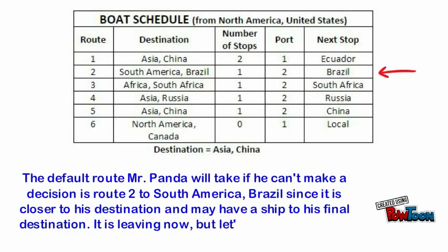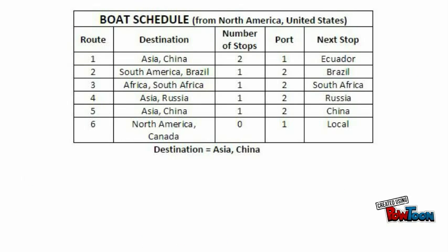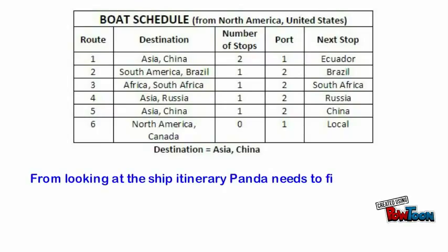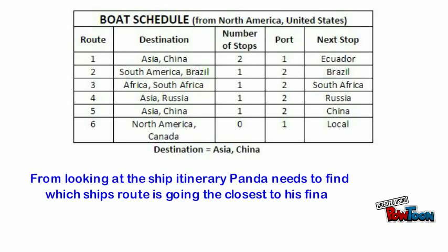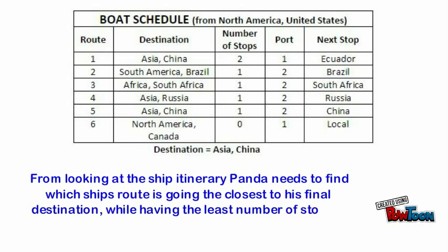He needs to check ship itineraries to see what route options are available to him and which route is the best one to take. The default route Mr. Panda will take if he can't make a decision is route 2 to South America, Brazil, since it's closer to his destination and may have a ship to his final destination. It is leaving now, but let's check if there is a better option.